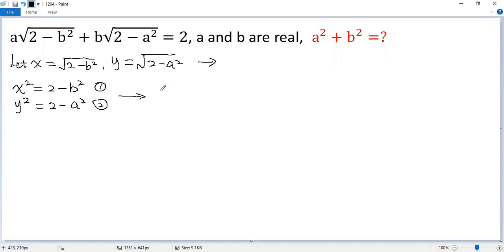We add them together. So the left side becomes x squared plus y squared. The right side becomes 4 minus a squared minus b squared.